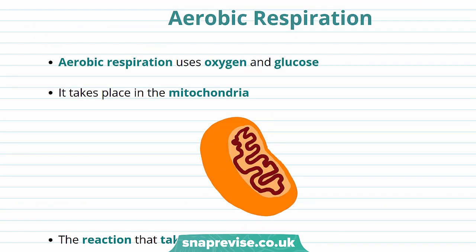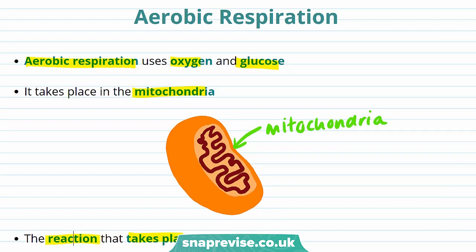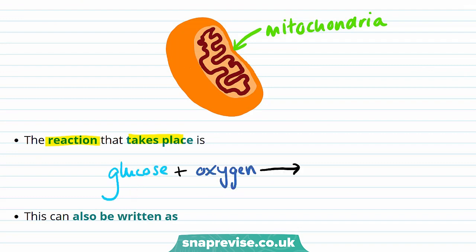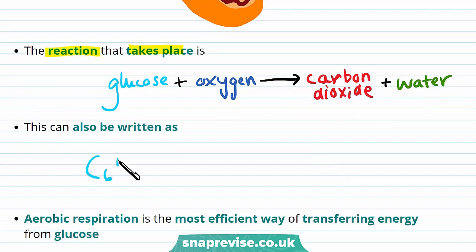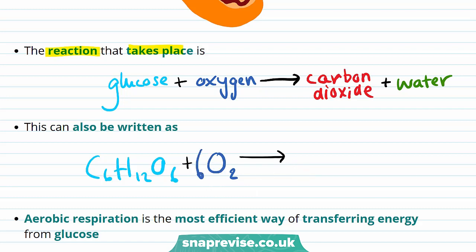So we know that aerobic respiration is important, but how does it work? Aerobic respiration uses oxygen and glucose, and it takes place in the mitochondria, which are present in our cells as subcellular structures. The reaction is: glucose plus oxygen goes to carbon dioxide and water. The chemical equation is C6H12O6 plus 6O2, giving 6CO2 and 6H2O.